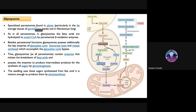In plants, the peroxisome is referred to as a glyoxysome because a specific metabolic cycle — the glyoxylic acid cycle or glyoxylate cycle — takes place within these organelles. Consider a seed that you allow to germinate, so that roots, stem, and the seedling grow.